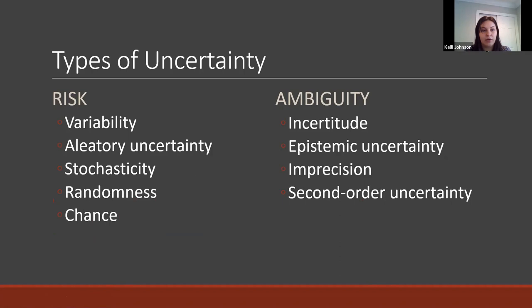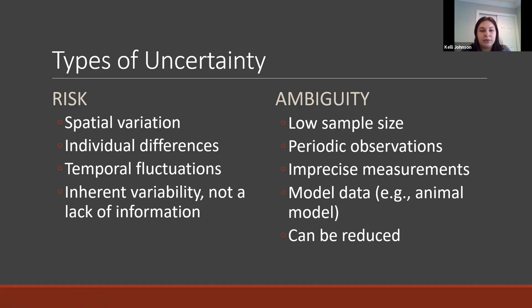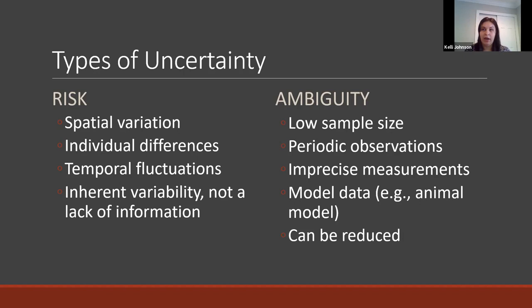Risk results from things like variability — it goes by many names: aleatory uncertainty, randomness. Ambiguity is what in psychology people call epistemic uncertainty, or maybe imprecision or incertitude. Risk comes from things like spatial variation and individual differences, while ambiguity comes from low sample size, periodic observations, or imprecise measurements. Ambiguity refers to uncertainty that can be reduced through empirical means, whereas risk is the inherent probabilistic nature of certain outcomes.